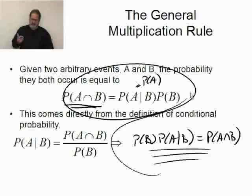So, this is the general multiplication rule. We have the specific case where we know A and B are independent, but if we don't know they're independent, then this is the way you go about it.